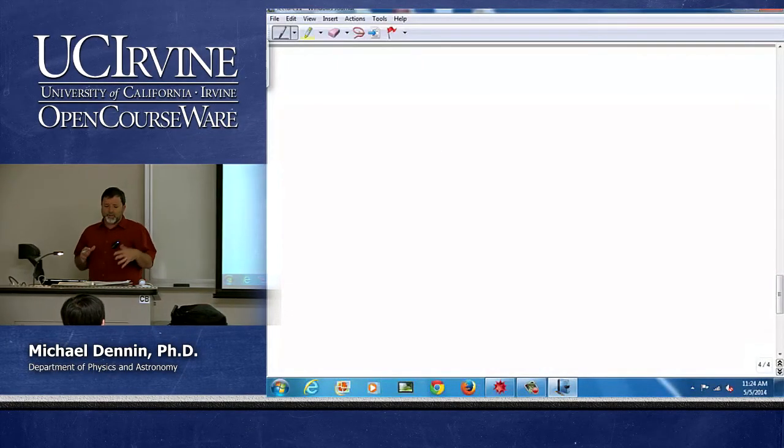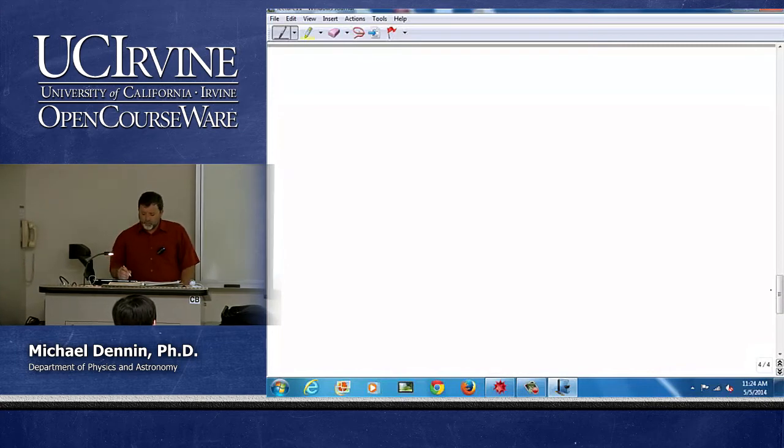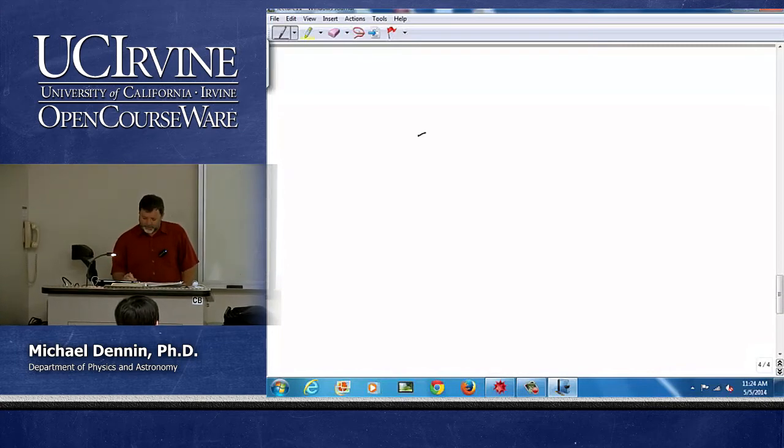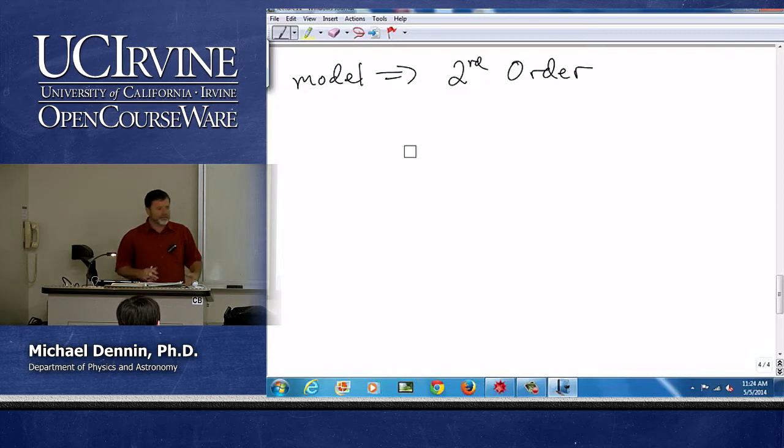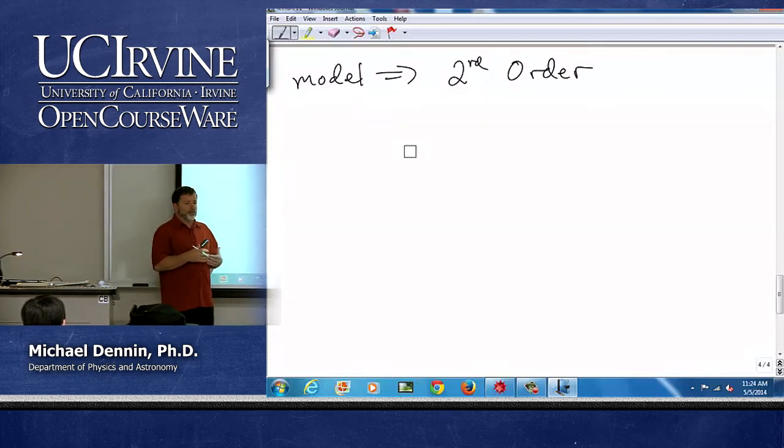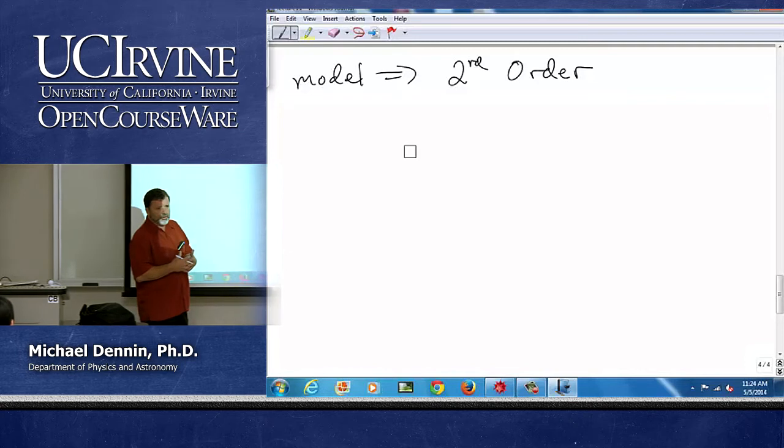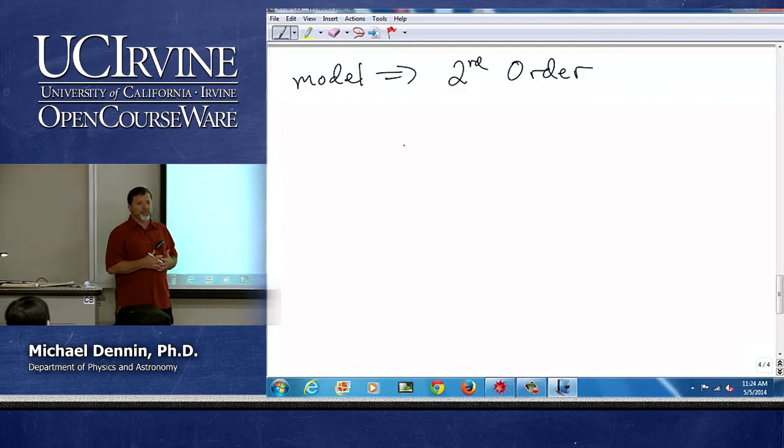Now, having looked at the reasons why we model differential equations, one of the things we hopefully got out of this is we very rarely need something more than second order. So what does the order of a differential equation refer to? What I want to do in this little segment here is remind you how to categorize differential equations. So what does the order refer to?